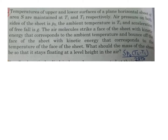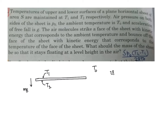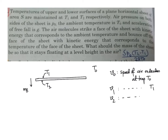Temperatures of upper and lower surfaces of a plane horizontal sheet are maintained at T1 and T2. This is a horizontal sheet; its weight is mg. The temperature of the upper surface is maintained at T1, the lower surface at T2, and the ambient temperature is T0. The air molecules strike the surface with kinetic energy corresponding to the ambient temperature. V0 is the speed of air molecules at temperature T0, V1 is the speed at temperature T1, and V2 is the speed at temperature T2.